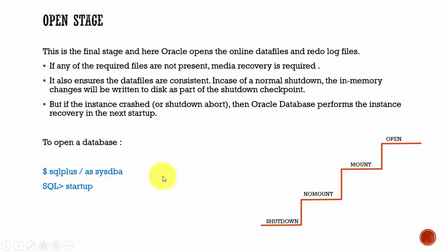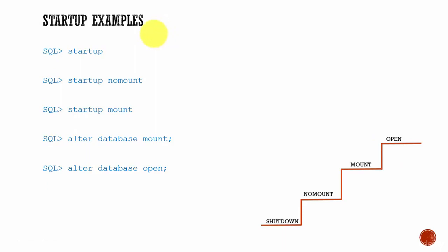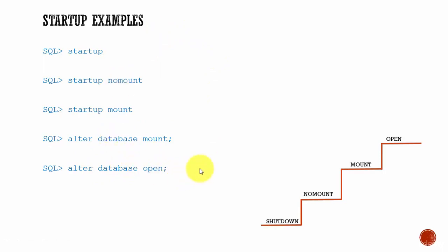If that happens, Oracle Database will perform an instance recovery whenever we are starting up next time. To open a database, just issue the command startup. It will go from shutdown mode to no-mount, then to mount, then to open mode. Unless the database is in open mode, no users can perform any transactions. Summary of commands: startup (opens fully), startup nomount (no-mount stage), startup mount (mount stage), alter database mount, and alter database open. Remember these commands so that you can start up the database in the mode you require.